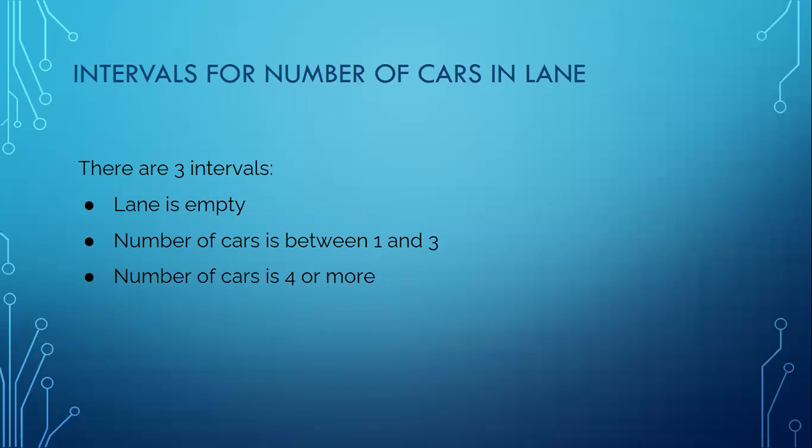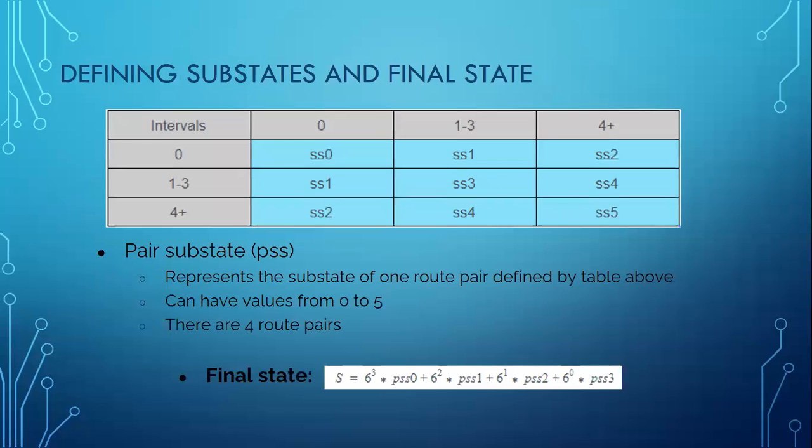Our detectors can detect nine cars in one lane, but in order to reduce the number of states, we decided to divide the number of cars in intervals. There are three intervals. The first interval is when the lane is empty. The second interval is when the number of cars in the lane is between one and three. And the last interval is when the number of cars in the lane is four or more than four. Because all lanes are in pairs, in this table, you can see how we got a pair substate from intervals. Pair substate represents the substate of one pair defined by table above, and a pair substate can have values from zero to five. And there are four different route pairs. The final state is calculated with this equation.